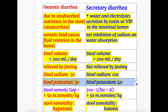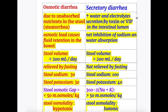Osmotic diarrhea is due to unabsorbed nutrients in the stool, or steatorrhea, whereas in secretory diarrhea there is increased water and electrolyte secretion by toxins or vasoactive intestinal peptides (VIP) in the intestinal lumen. The osmotic load causes fluid retention, whereas in secretory diarrhea there is net inhibition of sodium and water absorption.